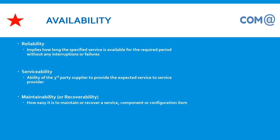Serviceability is the ability of a third-party supplier to provide the expected service to the service provider. We have a lot of dependency on service providers like Microsoft, Cisco, third-party vendors, and network links. To maintain high availability, you should have a good contract with all these service providers ensuring that if services go down, they provide fast support — like replacement of components, bug fixes, or bringing the server back online.